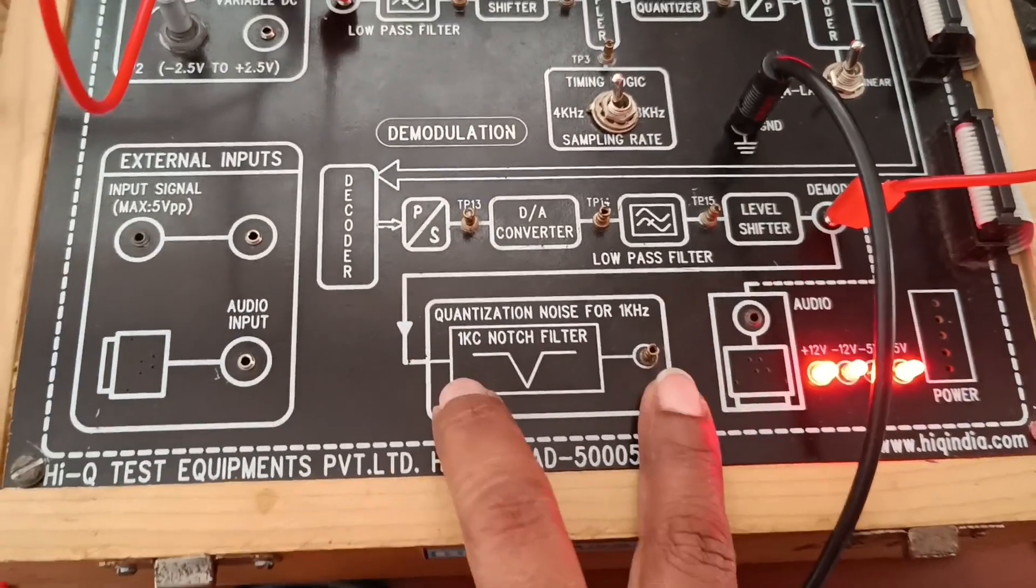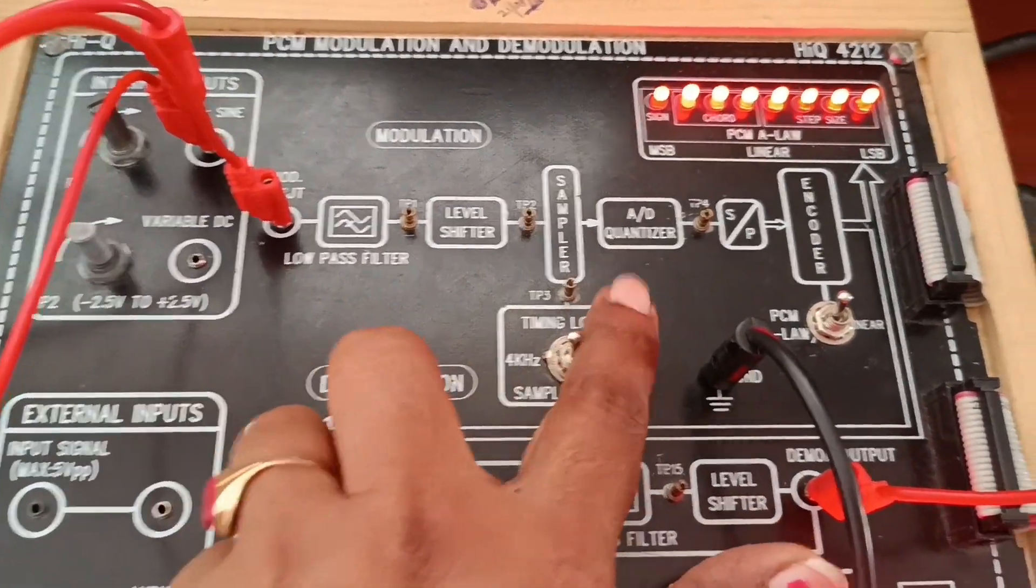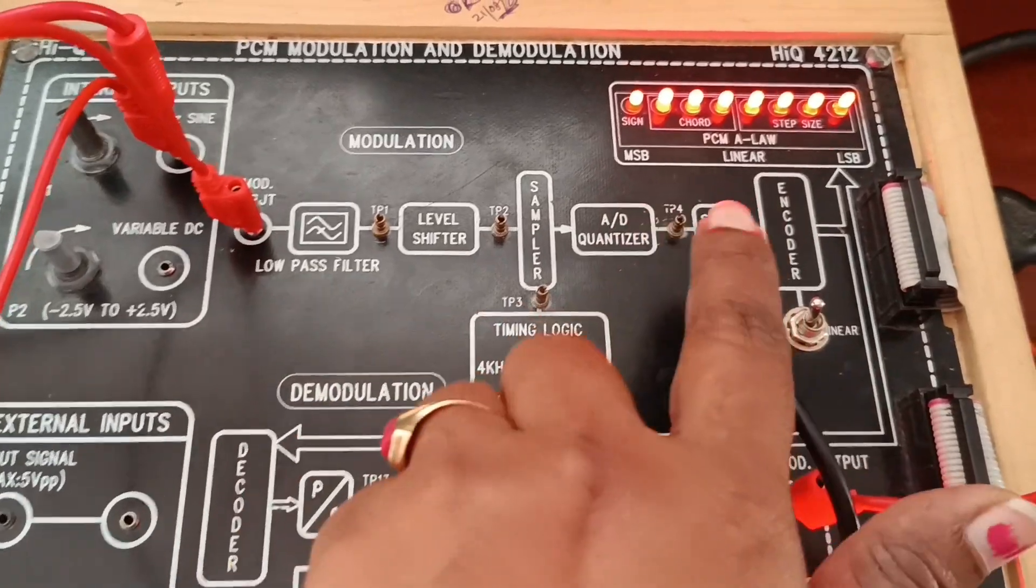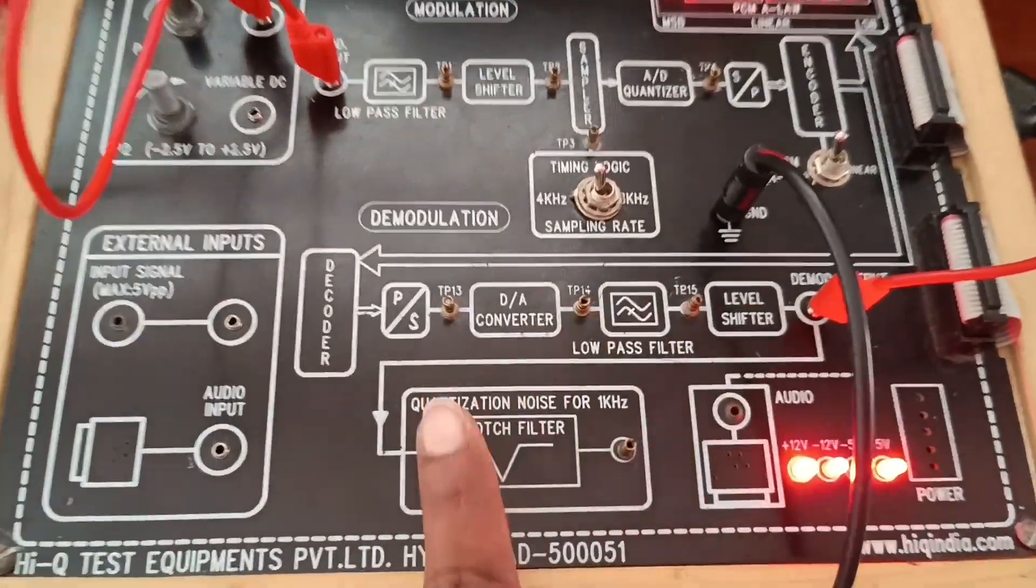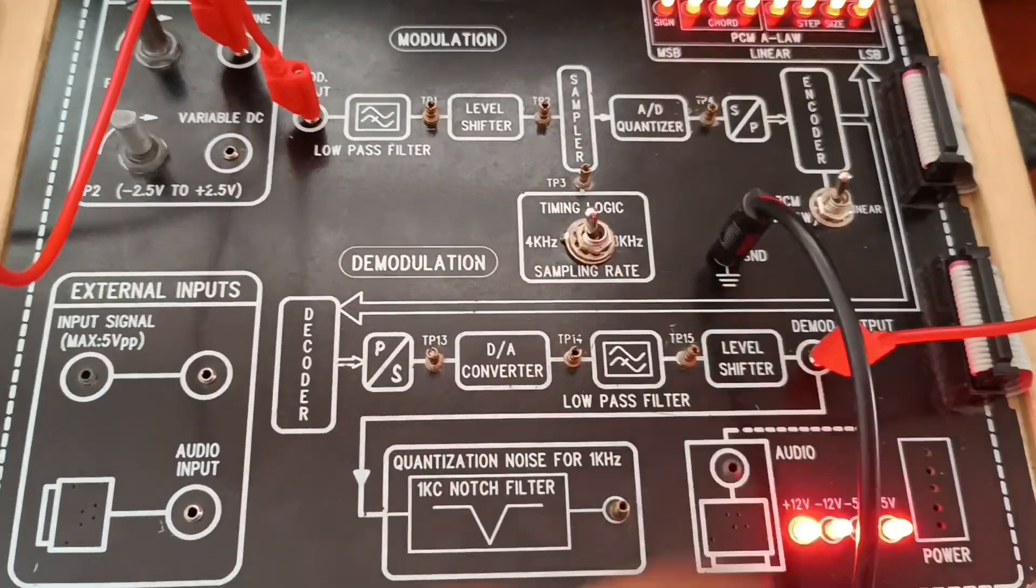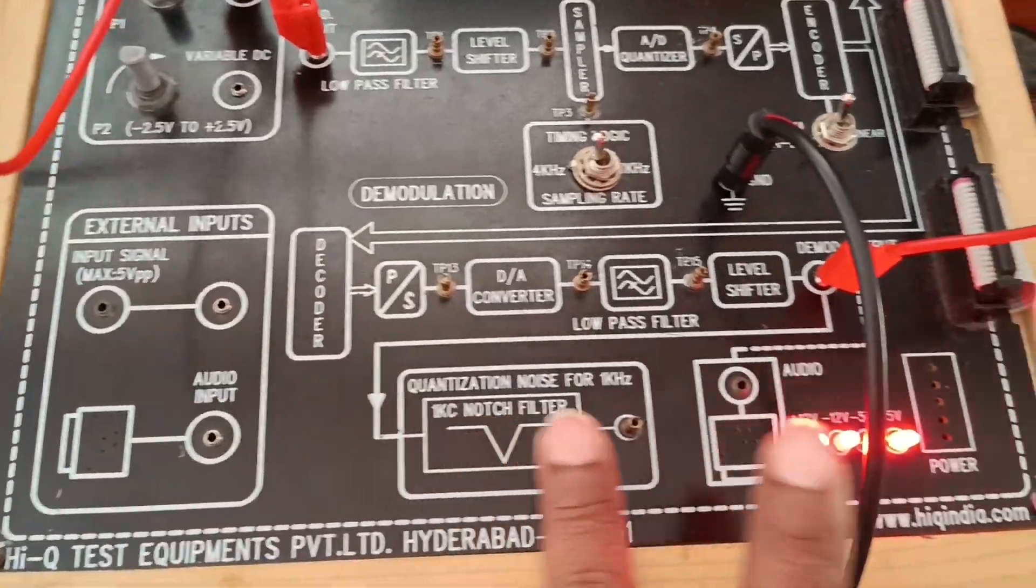This is the block diagram Pulse Code Demodulation. If you observe here: Low Pass Filter, Level Shifter, Sampler, A to D, Quantization, Serial to Parallel Converter encoded. Reverse process in Demodulation - whatever in the Modulation process, this is the reverse process.